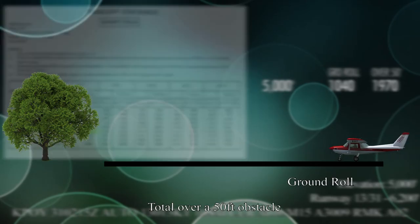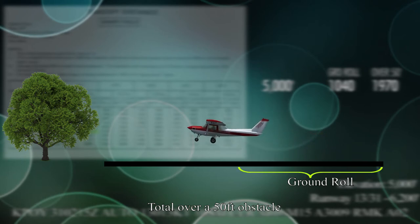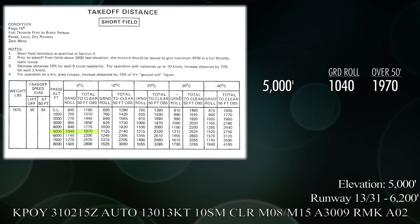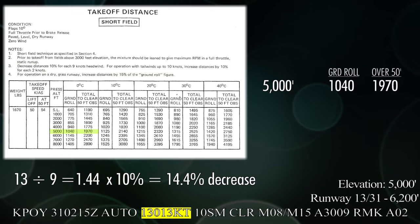Just as a review, the ground roll number is from when you apply power to when you get off the ground. And the 50 foot obstacle number is from when you applied power until you took off and then climbed 50 feet. Okay, so our 5,000 foot numbers are 1,040 and 1,970. Now if we read the notes like we should, number three says you should decrease your distances 10% for every 9 knots of headwind. So if we take 13 knots that our wind is divided by 9, you get 1.44.